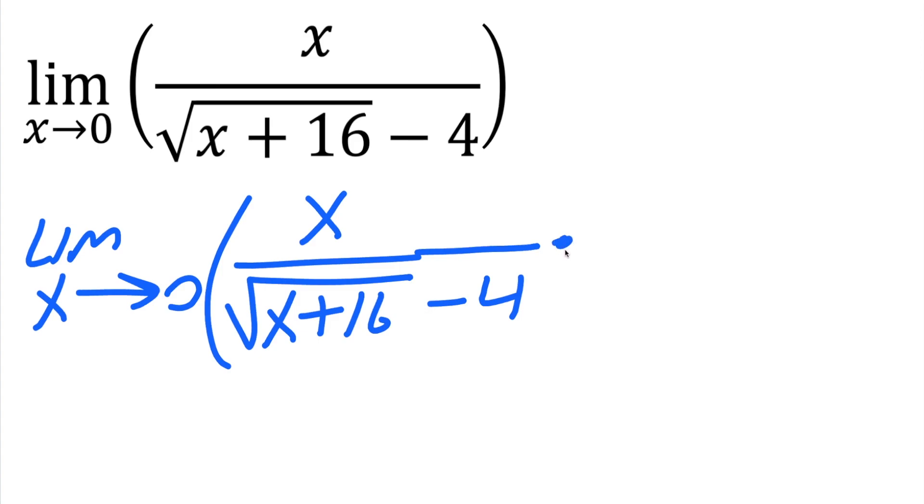So when I say multiply by the conjugate, right here is a negative, so the opposite is an addition. So what we're going to do is rewrite this as the square root of x plus 16 plus 4, the opposite of this piece, and I'll put parentheses, and I'll put a parentheses here on this piece.